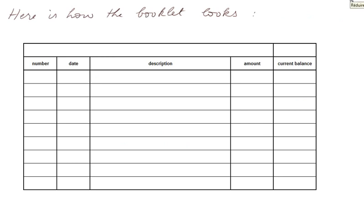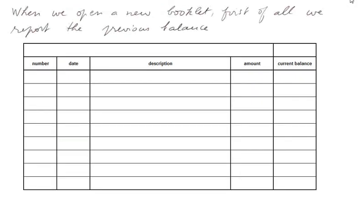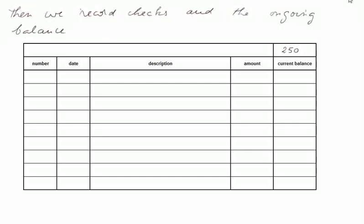Here is the way the booklet looks. It displays a column for the number of the check, the date of the check, the description of the check, the amount of the check, and the current balance. For those already familiar with the look of an account, note this is not an account. When we open a new booklet, first of all we report the previous balance.